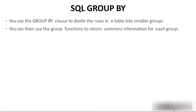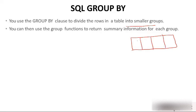You use the GROUP BY clause to divide the rows in the table into smaller groups. For example, the registrar office in every school or college has data of all the students. We will group those students according to their classes. You can then use the GROUP BY function to return the summary information of each group — so finally you return the summary information of every group.